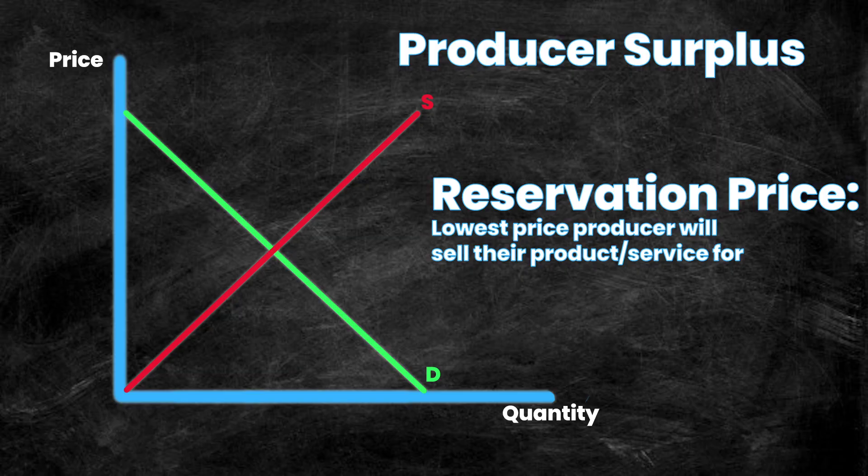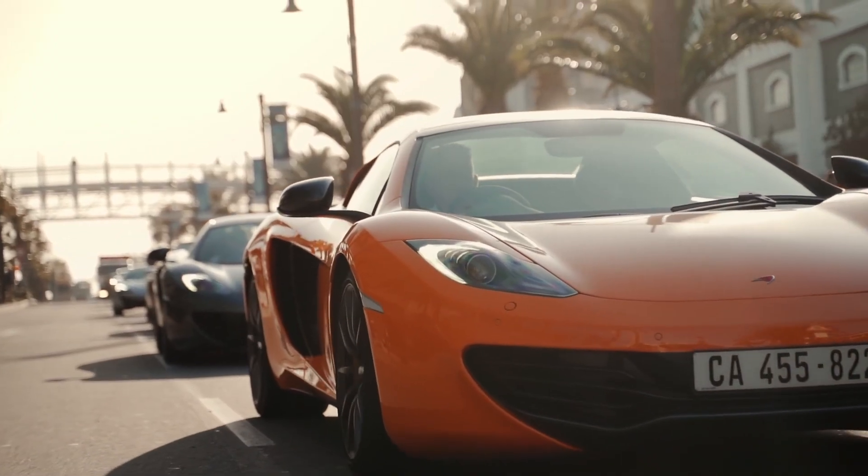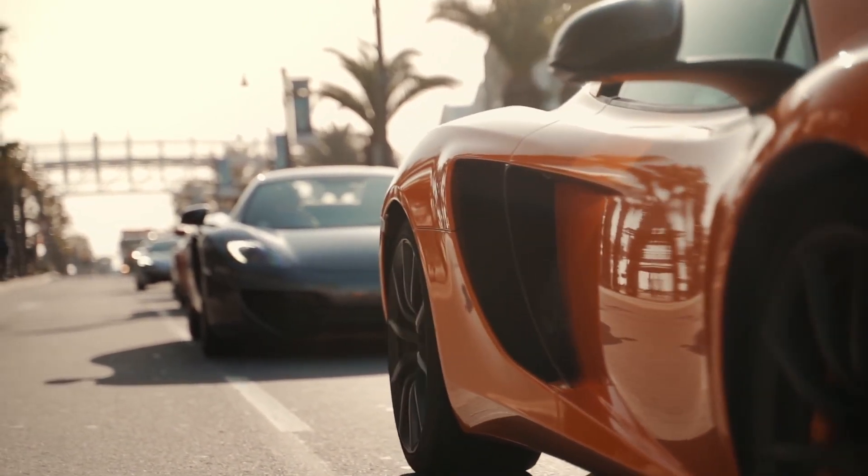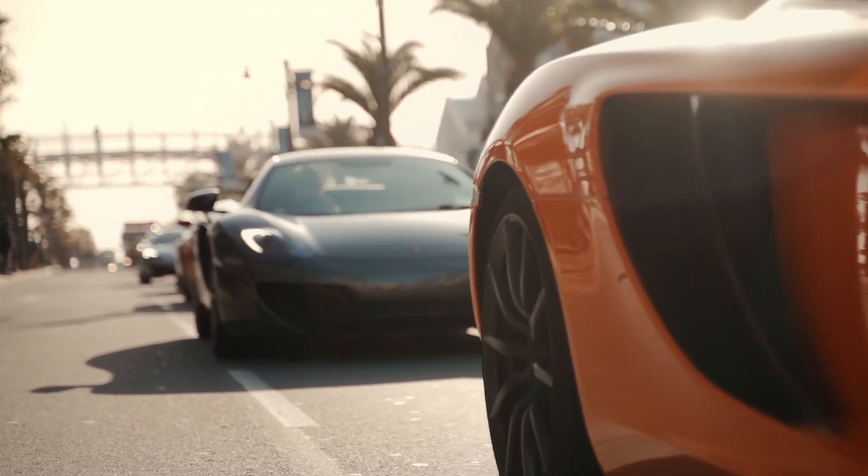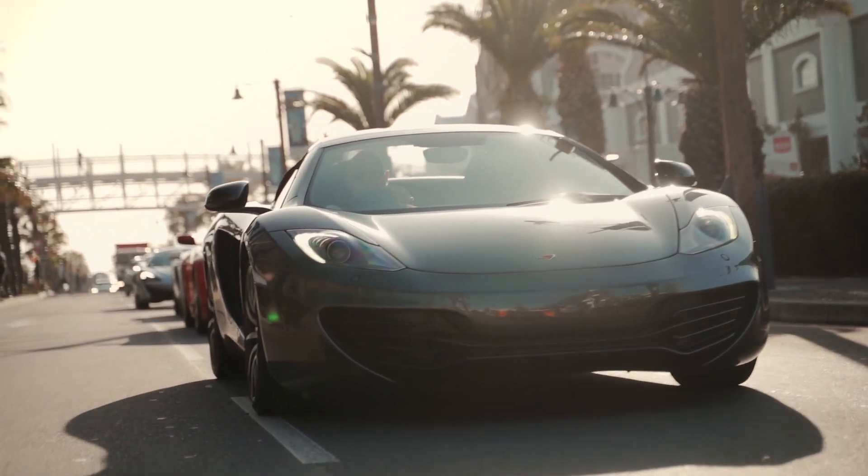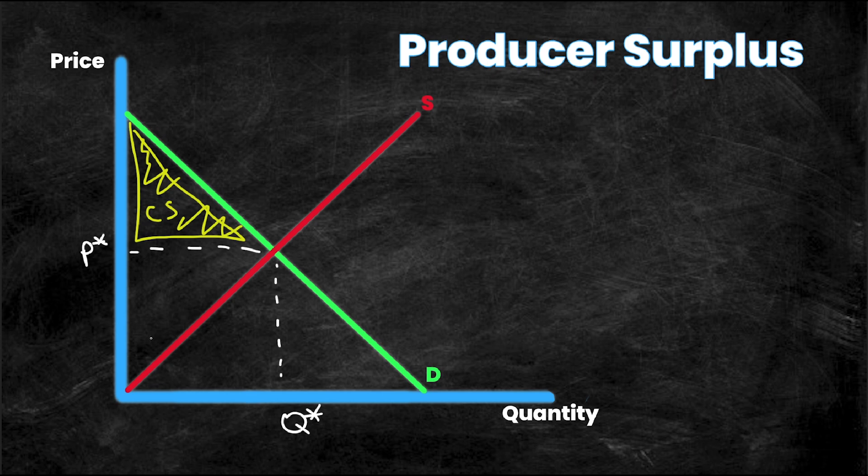So producers like consumers have a reservation price or a willingness to sell which is the lowest amount of money they would accept for their product in order to sell it. This price is a reflection of their costs and so high cost producers, producers who have very expensive products to make, obviously need to sell their products for a higher amount of money to recover those costs. We can see the producer's reservation price by looking at the supply curve. So the supply curve reflects the firm's costs as it indicates what the price has to be in order for producers to actually supply the good.